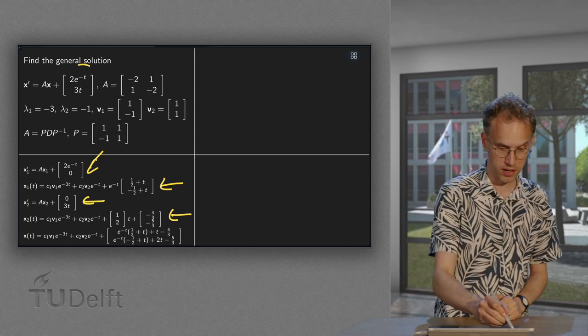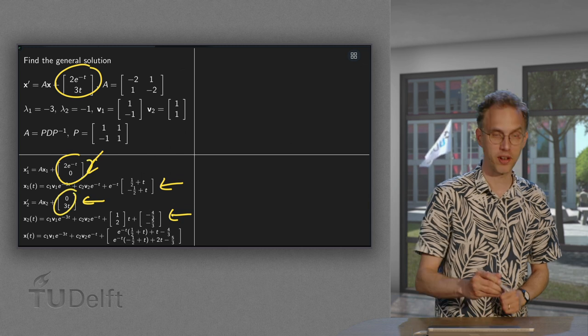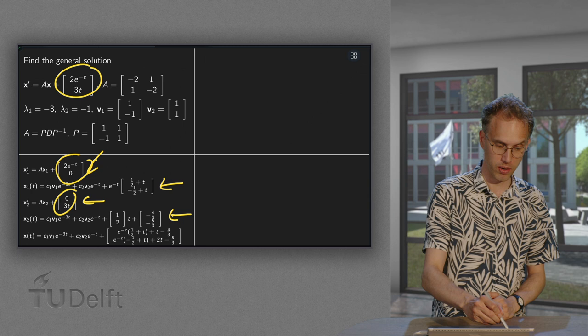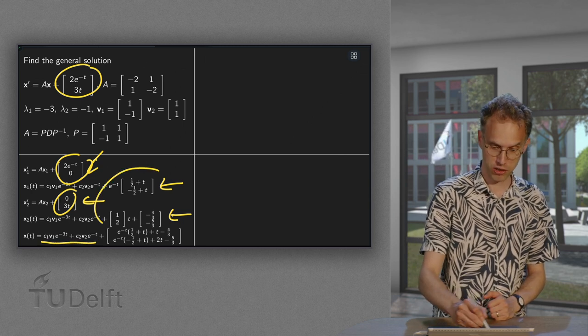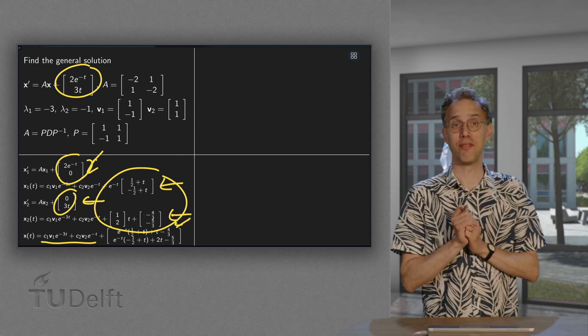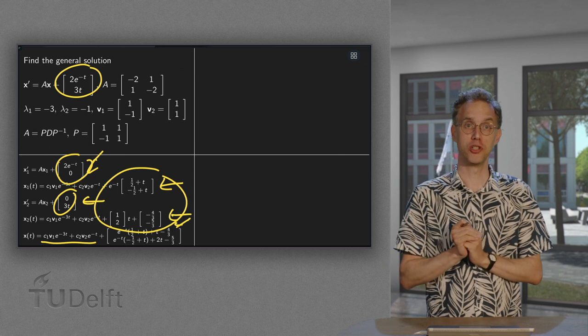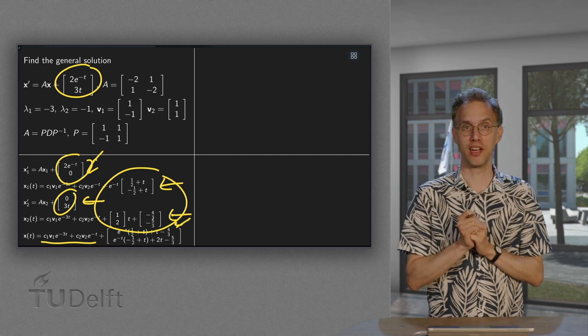And this part, this non-homogeneous part is this one plus that one. So that means that the total solution will be the homogeneous part plus the sum of the two particular solutions we found here. So there we go. We already have the total solutions because we can just add the two particular solutions we found earlier. So we know the solution over here.